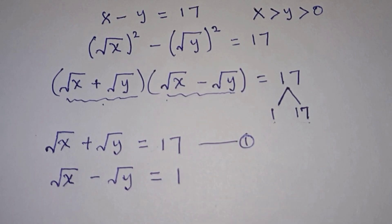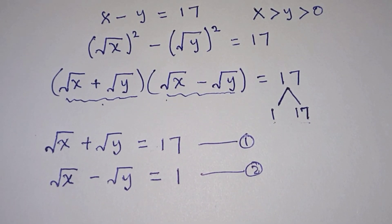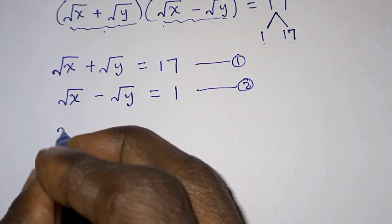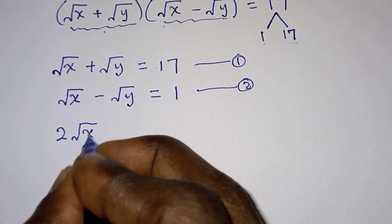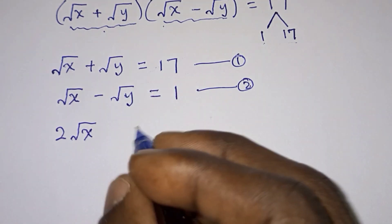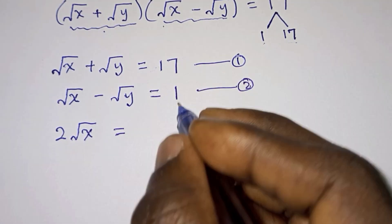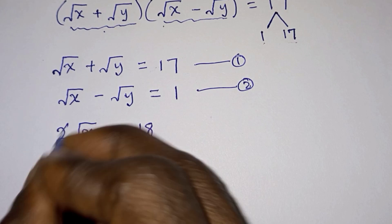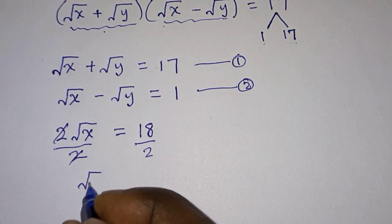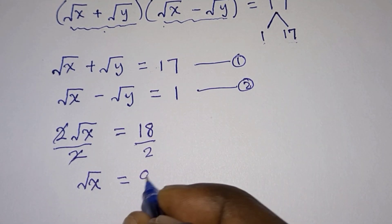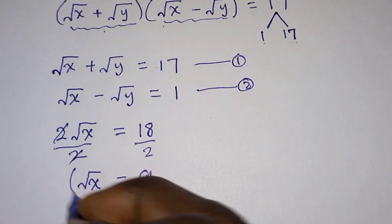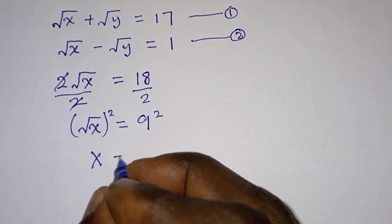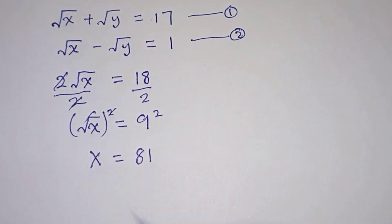And square root of x minus square root of y equals 1 as equation two. Now let's sum the two equations. Square root of x plus square root of x gives us 2 times the square root of x; the square root of y terms cancel to zero; and the right hand side is 17 plus 1 which is 18. Dividing through by 2 gives square root of x equals 9, so x equals 81.